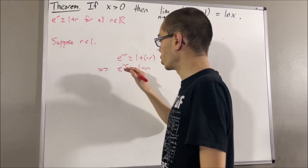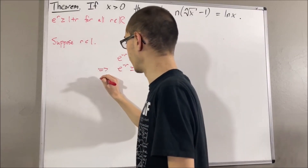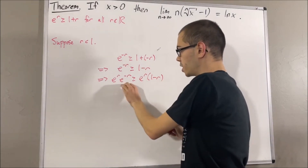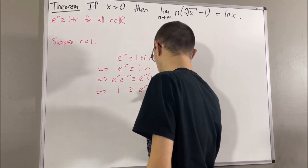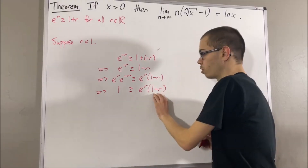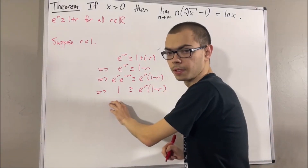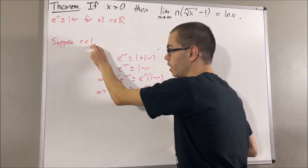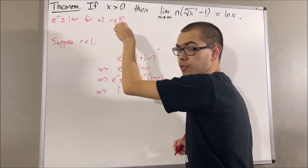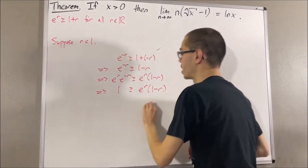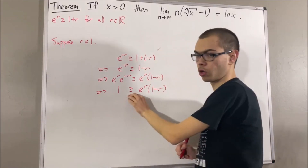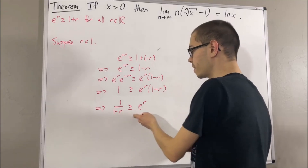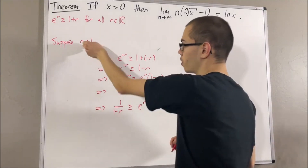If we multiply e to the r on both sides, the left-hand side becomes just 1. Then, if we divide 1 minus r to the other side — and we can do that because since r is less than 1, that implies 1 minus r is greater than 0 — the sign of the inequality will remain the same.